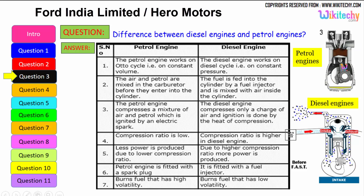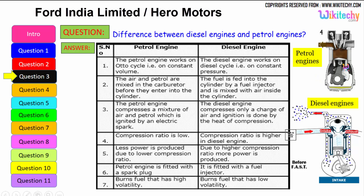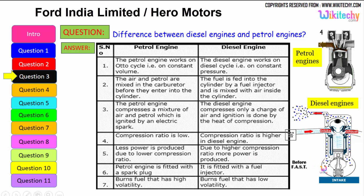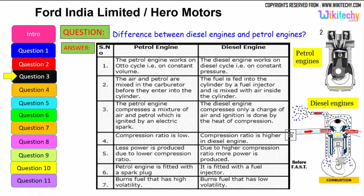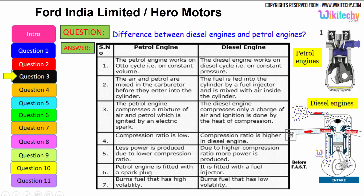The petrol engine has a lower compression ratio and produces less power, while the diesel engine has a higher compression ratio and produces more power. The petrol engine is fitted with a spark plug, whereas the diesel engine is fitted with a fuel injector. Petrol is a highly volatile fuel, whereas diesel is a low volatility liquid — so the diesel engine can burn low volatility liquids as well. These are the key differences between the petrol engine and the diesel engine.